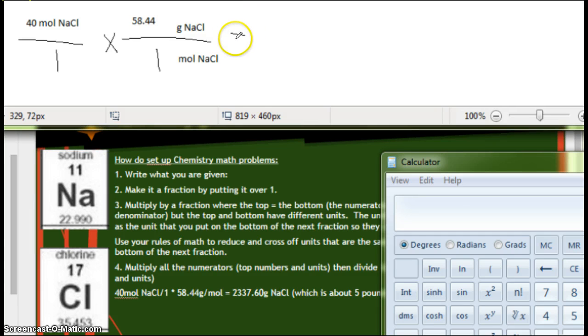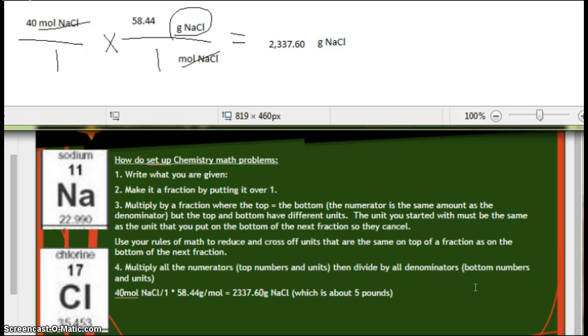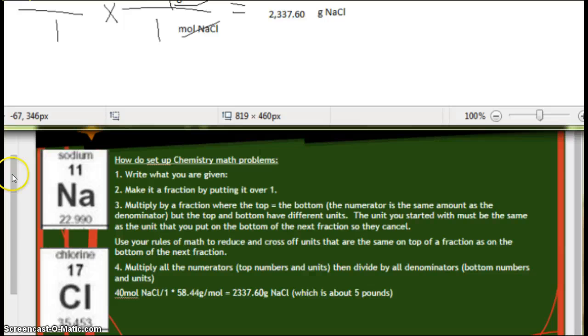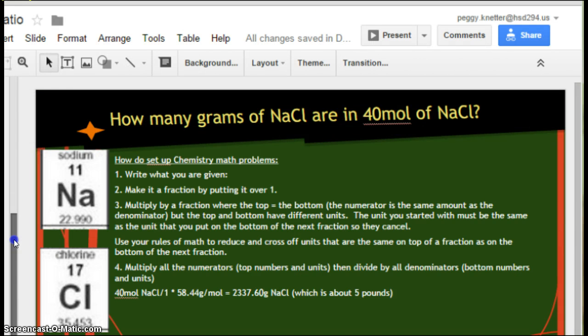So equals 2,337.60 because I always went to a hundredth. What's my unit? Well, if we look, these canceled off. So the only thing I have left is grams of NaCl. Now, just to let you know, this many grams for 40 moles is about five pounds. So if you bought a five-pound bag of salt, it has about 40 moles of table salt in it. The mass and size of a mole depends on what chemical you're doing, but I wanted to show you a few common things.